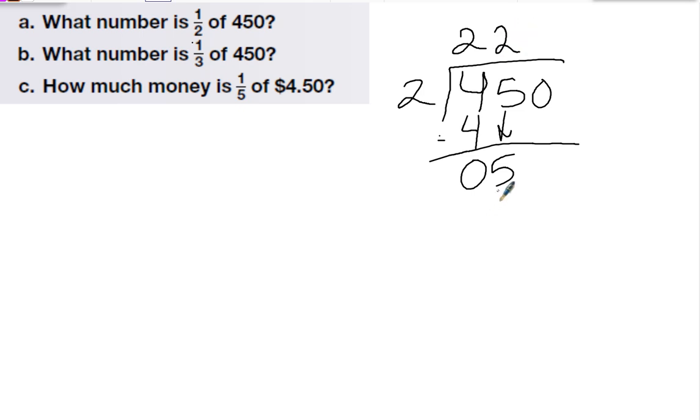2 goes into 5 2 times, 2 times 2 is 4, subtract 1 left over, bring down the 0. 2 goes into 10 5 times, so 1 half of 450 is 225.